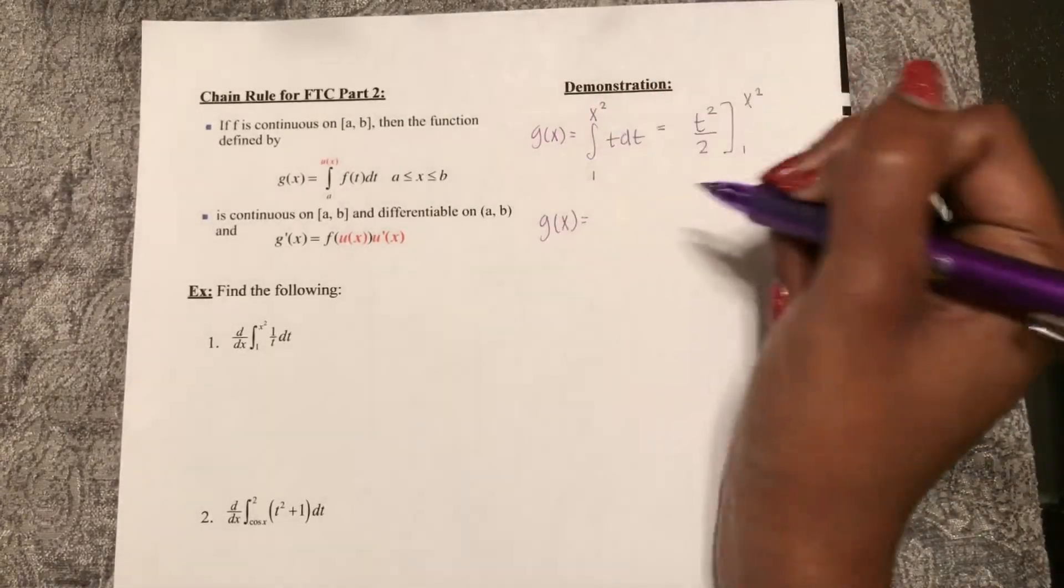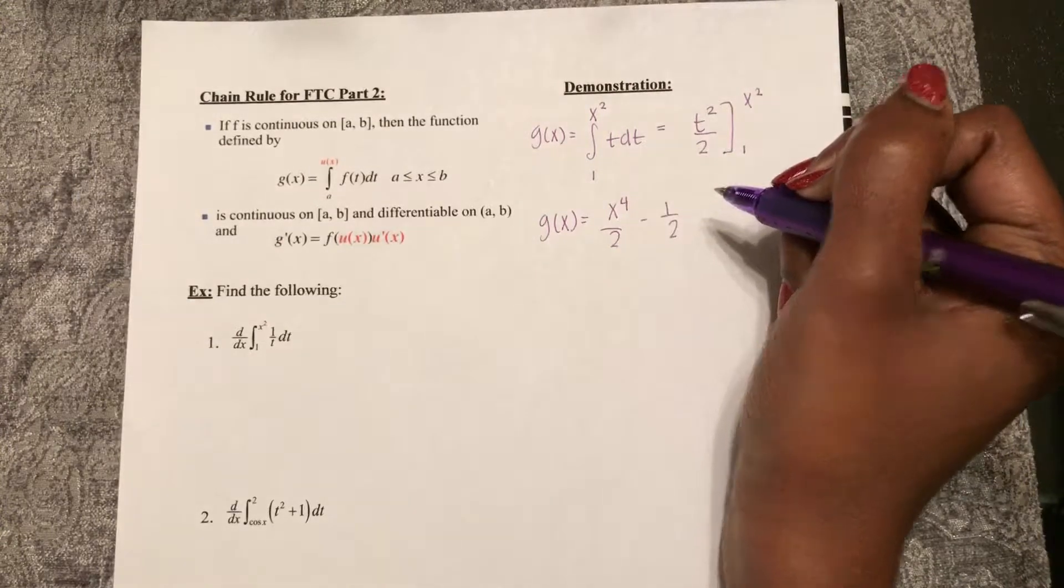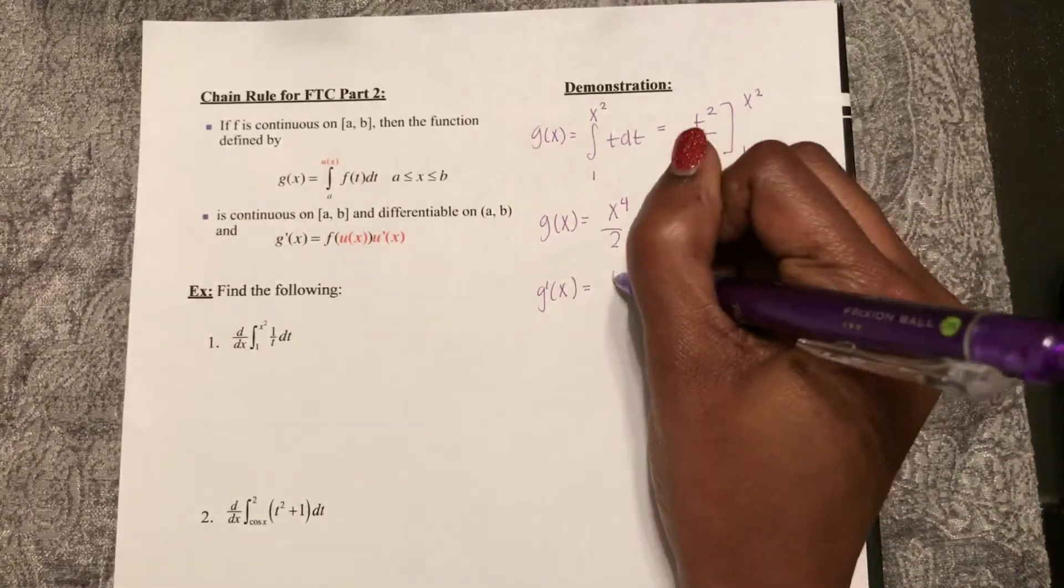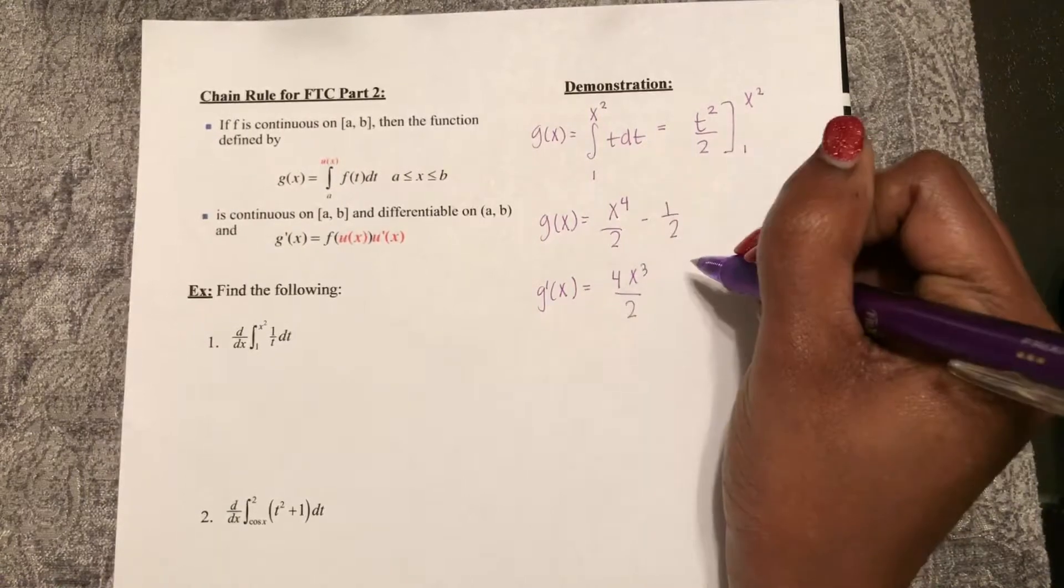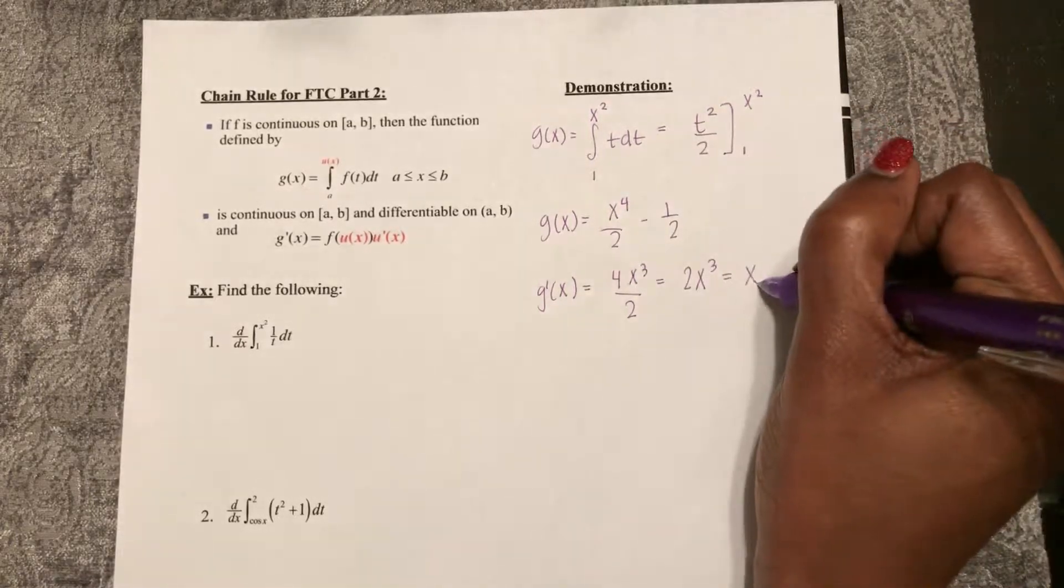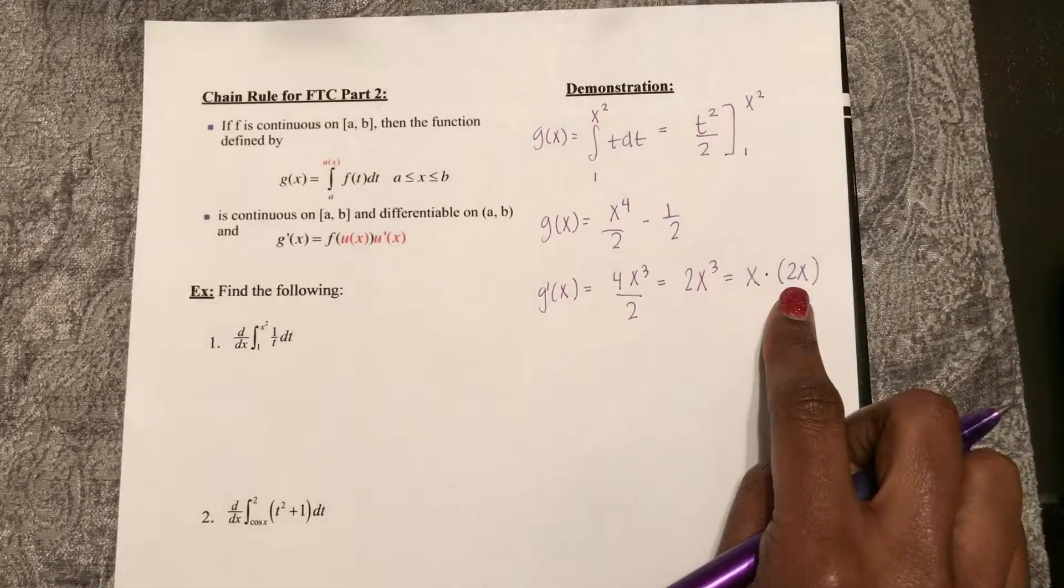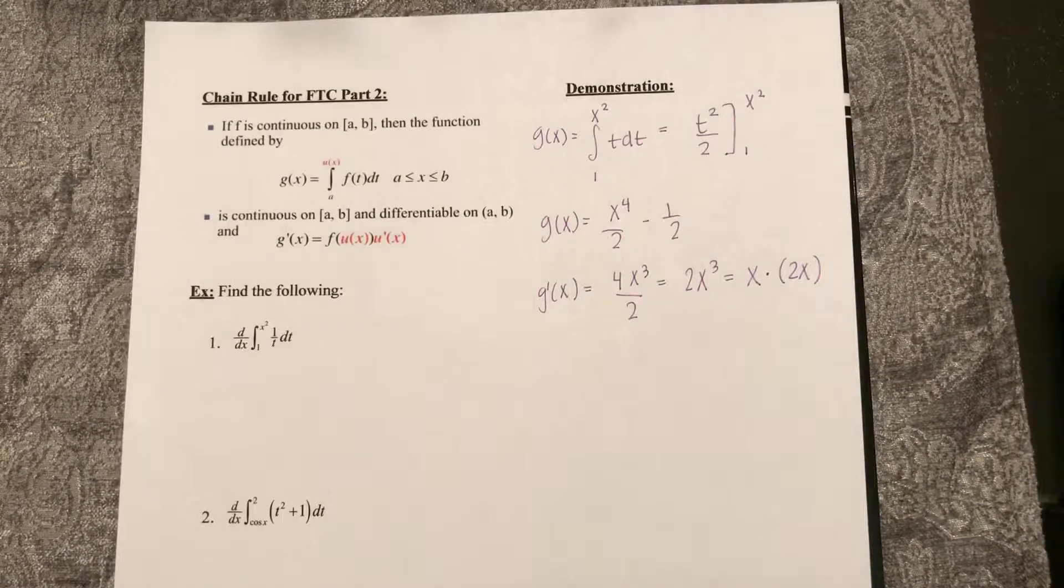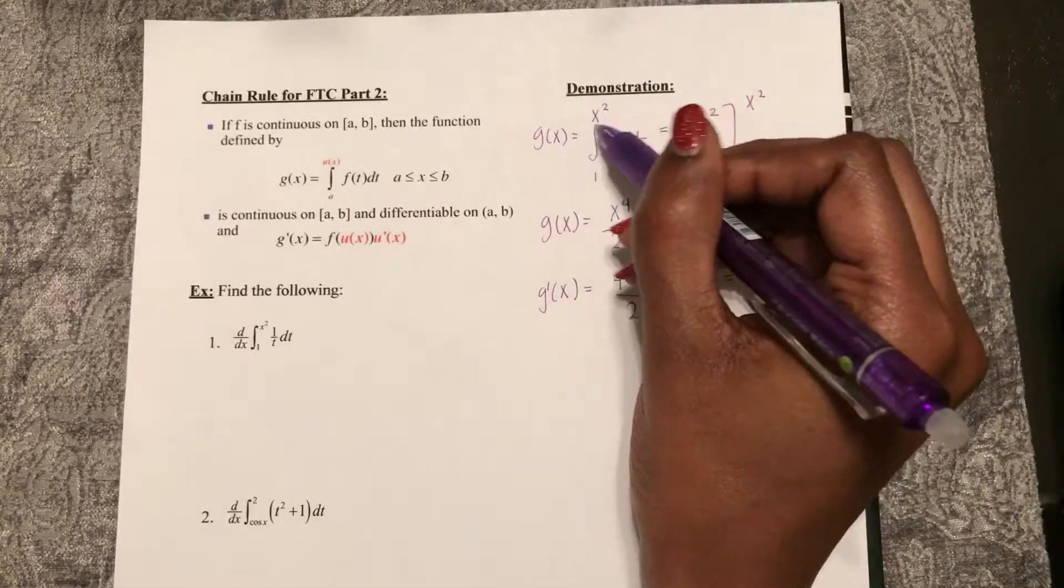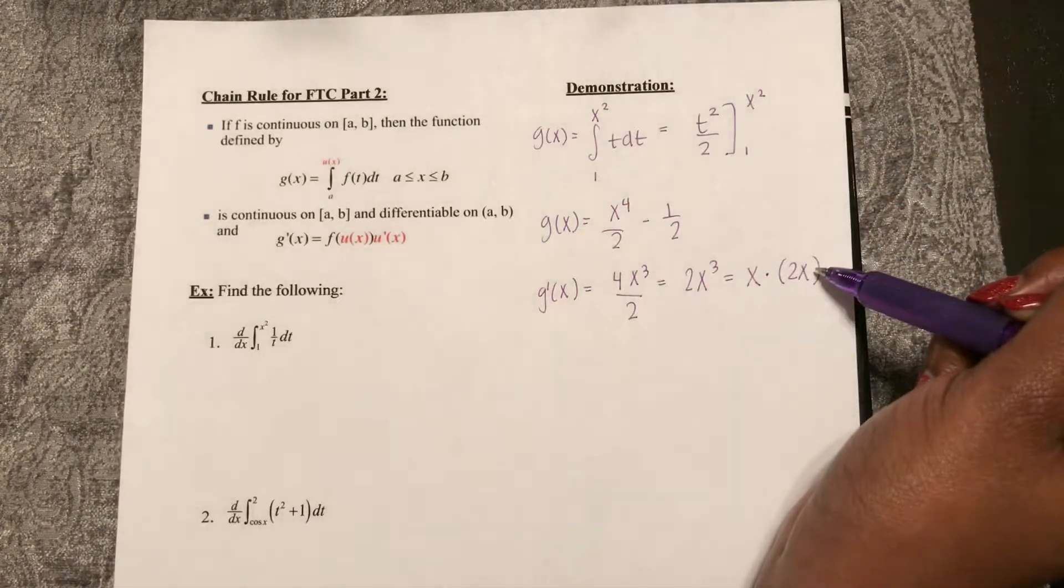So that would make g of x equal to x to the 4th over 2 minus 1 half. So g prime of x is 4x cubed over 2 minus 0, which is 2x cubed. But if I look at that, that's the same as x squared multiplied by 2x, which is the derivative of x squared. So if we have a function set up like FTC number 2, but that top integral is a function larger than x, we need to multiply by its derivative on the end.